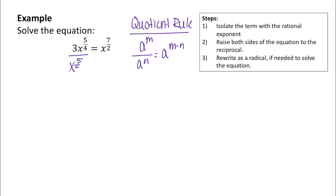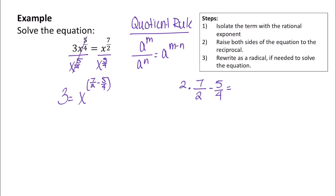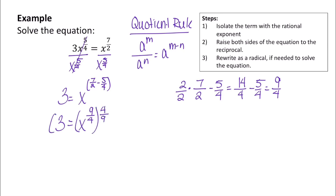I'm going to divide both sides by x to the 5 over 4. That gives me 3 equals x to the quantity 7 over 2 minus 5 over 4. To subtract those fractions, I multiply the first by 2 over 2, giving me 14 over 4 minus 5 over 4, which equals 9 over 4. So I have 3 equals x to the 9 over 4 power. I can undo that by raising both sides to the 4 over 9 power — the reciprocal — giving me 3 to the 4 over 9 equals x.